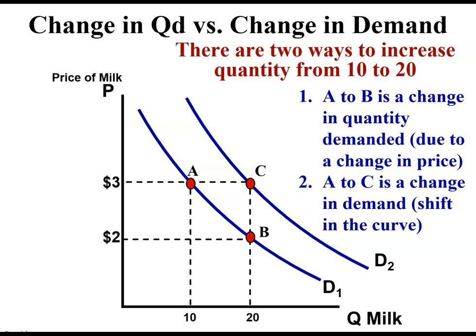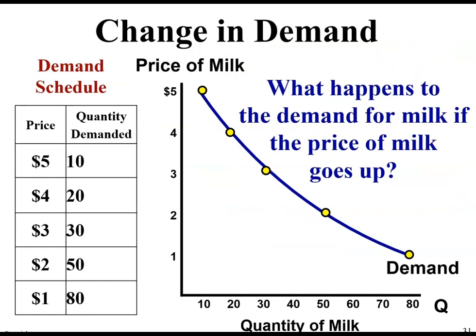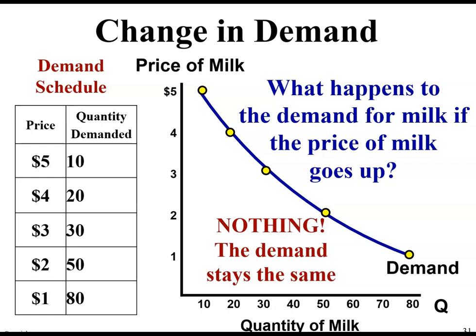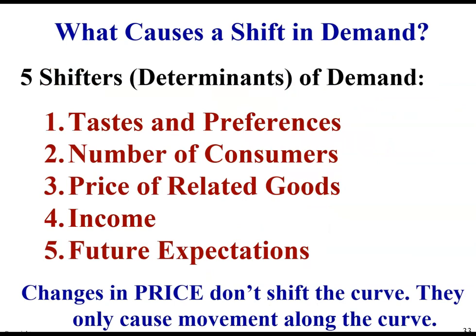The other way is to get from A to C — something caused the entire demand curve to shift, so we have an increase in quantity being consumed from 10 to 20, but the entire curve has shifted. So what happens to the demand for milk if the price of milk goes up? Nothing — the demand stays the same. What changes is the quantity demanded. There are five things that can shift demand: taste and preferences, number of consumers in the market, price of related goods, income, and future expectations. A change in price does not shift the curve — it only causes movement along the curve, referred to as quantity demanded.